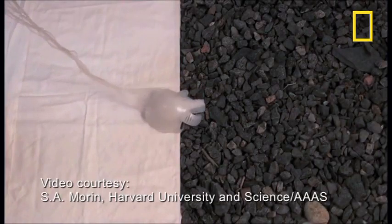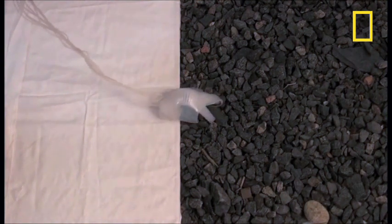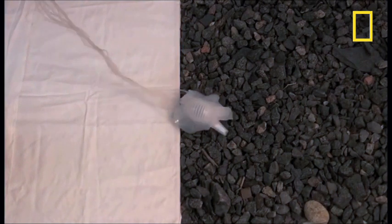Researchers at Harvard University have made a soft flexible robot that can change colors, enabling its use in places where machines shouldn't be noticed.